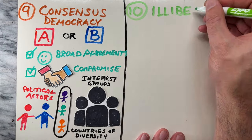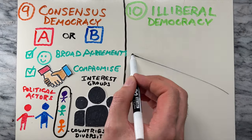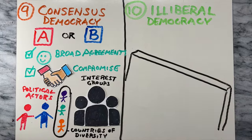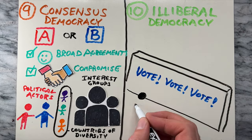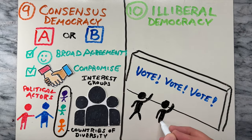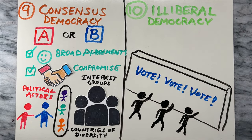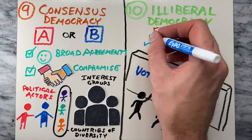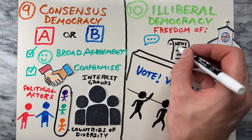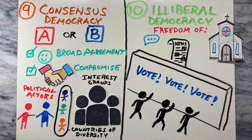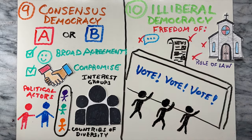Number 10 is illiberal democracy. In illiberal democracies, there is a facade of democratic elections, but in practice, civil liberties, freedom of press, and the rule of law may be undermined or restricted.